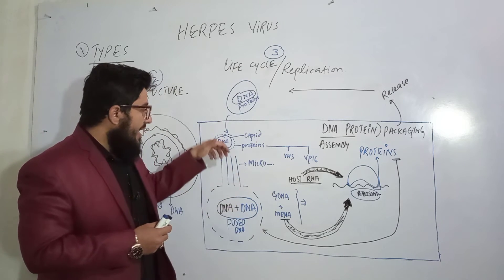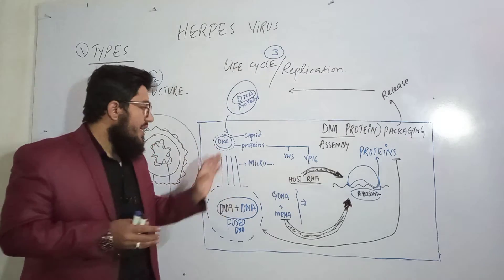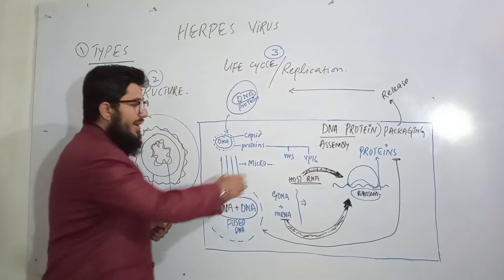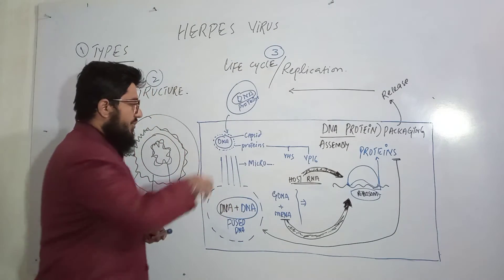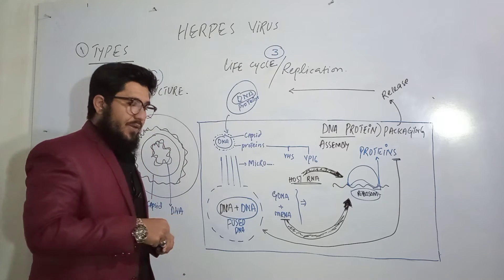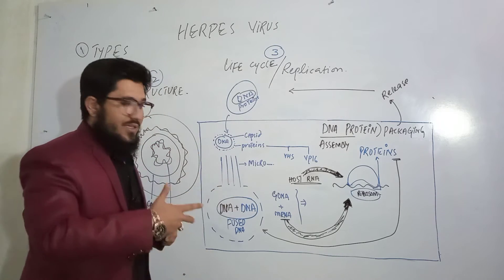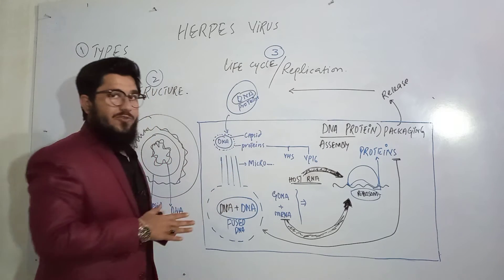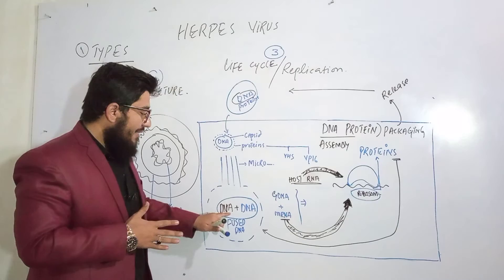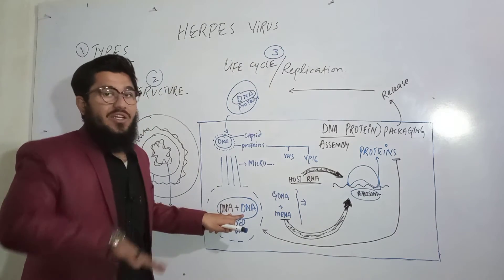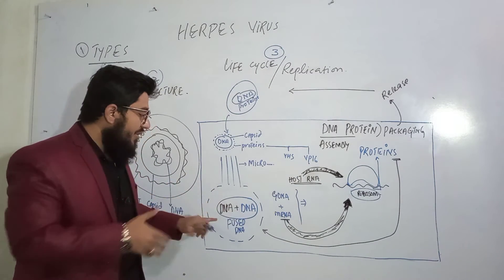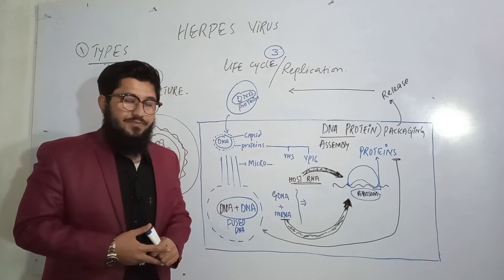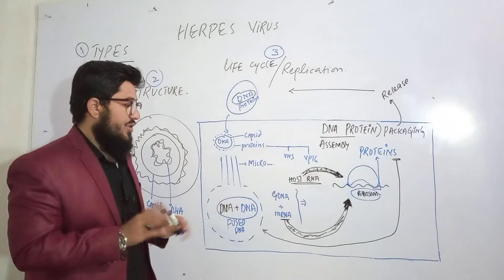The capsid along with the DNA will start moving towards the nucleus of the host cell. They will travel along a path provided by the microtubules. As they reach the nucleus, the capsid will be removed and the DNA only will move into the nucleus of the host cell. Here, the host DNA and the new viral DNA will fuse together and synthesize only one fused DNA.